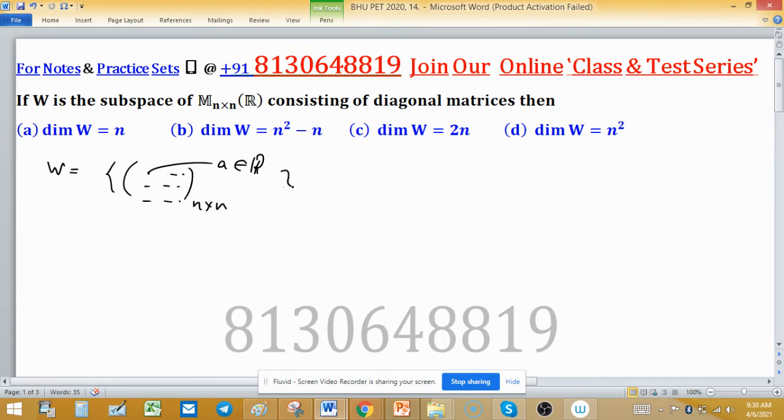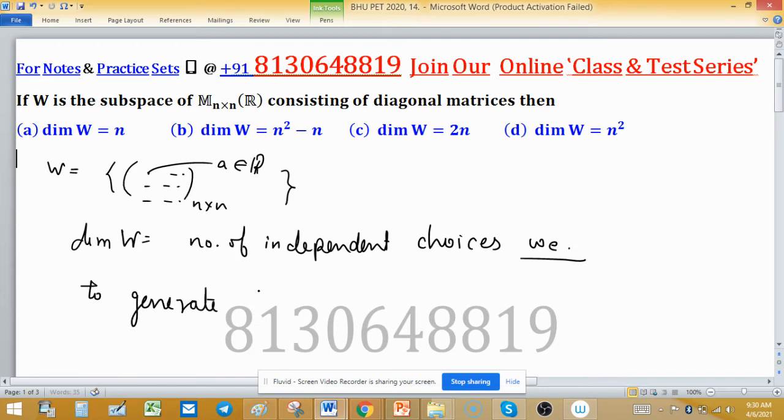So these are the elements of W. Now we need to find the dimension of W. In short, you can understand dimension as the number of independent choices we have to generate an element of W. To generate an element of W, how many independent choices do we have?